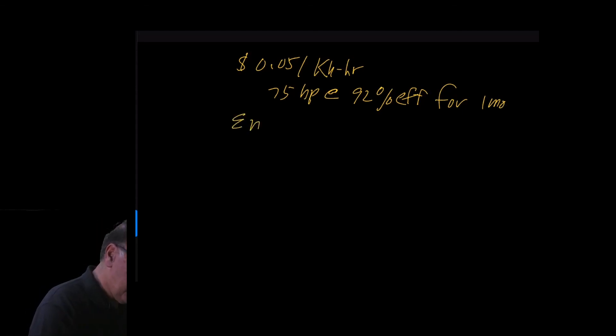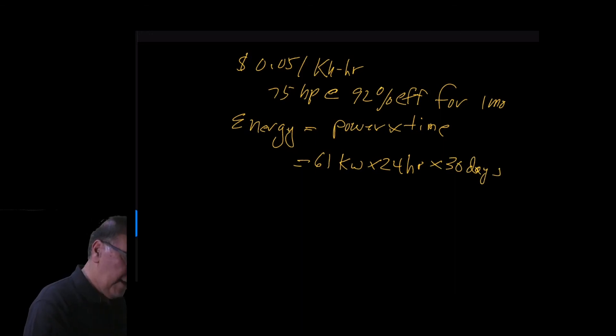So energy equal to power times time. And that will equal 61 kilowatts times 24 hours in a day times 30 days. And that equals 44 megawatt hours and that equals 44 thousand kilowatt hours.